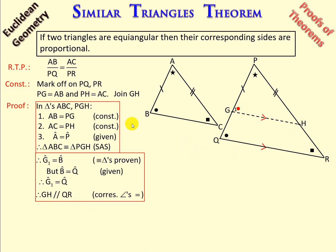So you'll notice, in the first part, I proved the two triangles congruent. In the second part, I went on to prove that GH is parallel to QR.